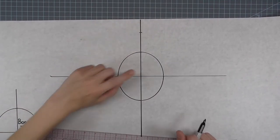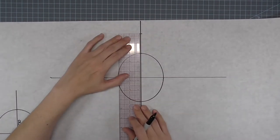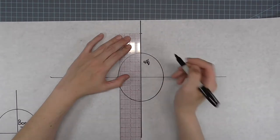Measure from the mark to the axis center and record the measurement. My measurement is 4 and 5 eighths inch.